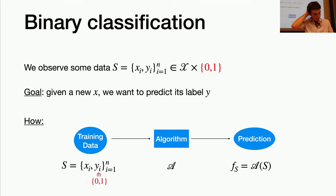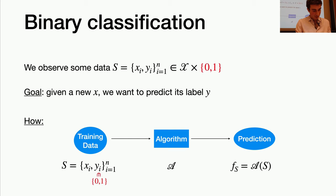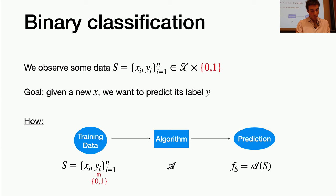A note on notation: lowercase letters like xi, yi refer to fixed observed vectors, while capital letters refer to random variables. Bold letters will be used when talking about the design matrix X containing all features x1 to xn.